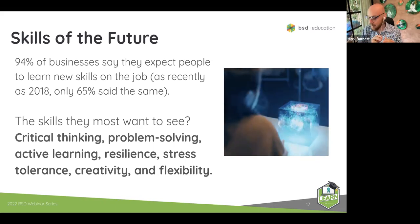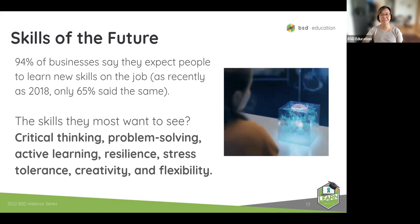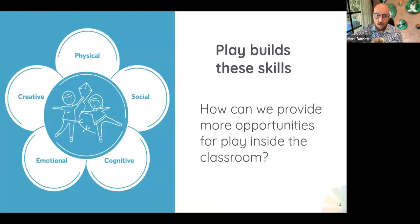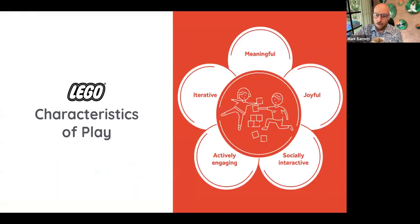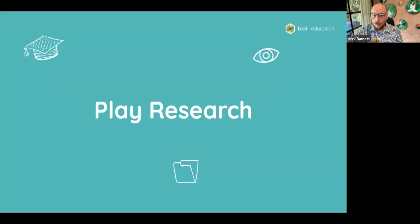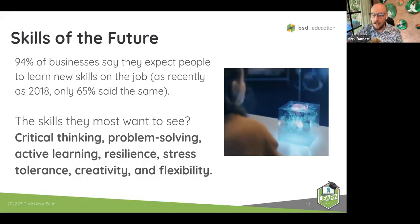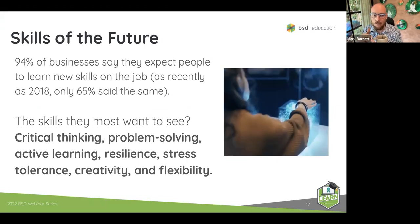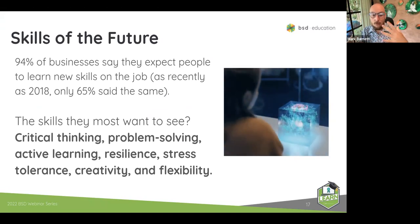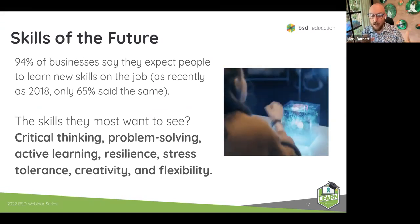Does that list sound familiar? We see those words almost every day in our work. If we go back to the characteristics of play — meaningful, joyful, socially interactive, actively engaging, iterative, social, physical, cognitive, emotional, creative — it sounds like what this report is saying, though not explicitly, is that we need to have more play in education to meet the gap that's currently happening in the future of work. Towards the end of this webinar, I'll give you some actionable things you can do in the classroom to increase play and meet this gap.